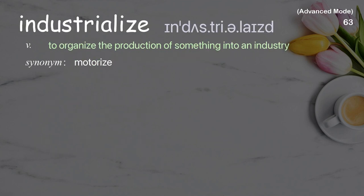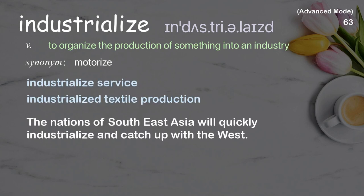Industrialize: To organize the production of something into an industry. Examples: Industrialize service. Industrialized textile production. The nations of Southeast Asia will quickly industrialize and catch up with the West.